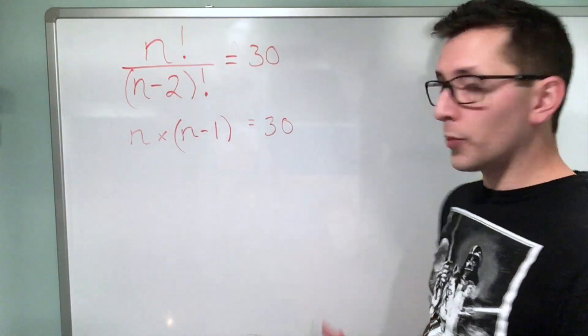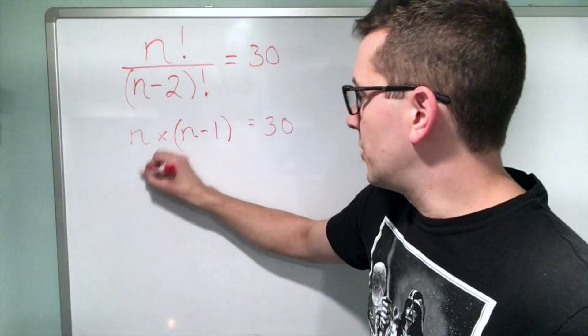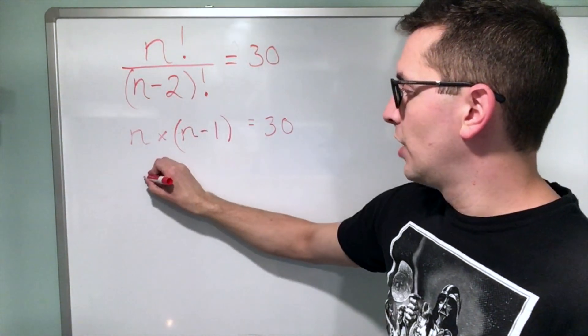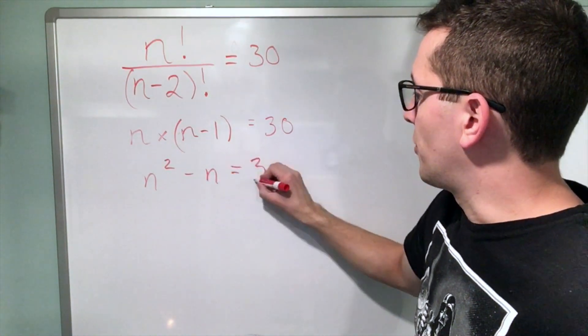And at this point, you should feel kind of comfortable with what you're seeing. n times n minus 1. I might as well simplify this and just sort of distribute the n into the brackets, resulting in n squared minus n. That's going to be equal to 30.